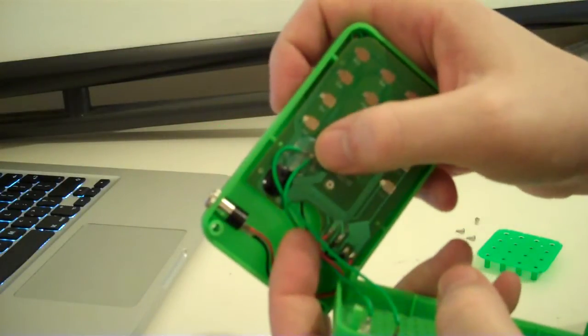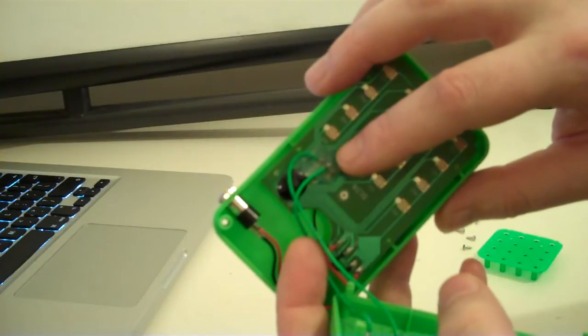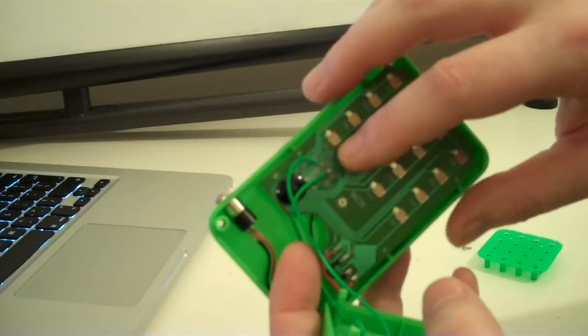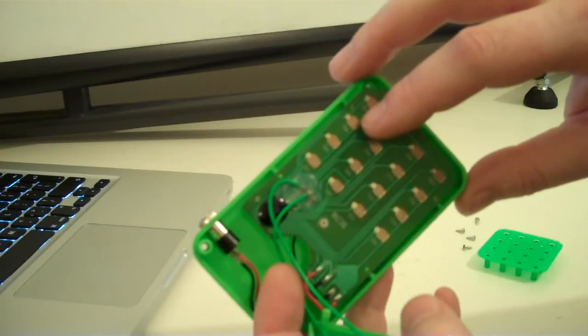And there's a big blob of hot glue there. Underneath that there's a few discrete components. That's the only other components on the board besides the COB. And there's a couple of resistors and a couple of capacitors, just little surface mount components.